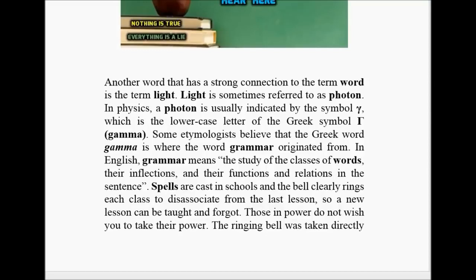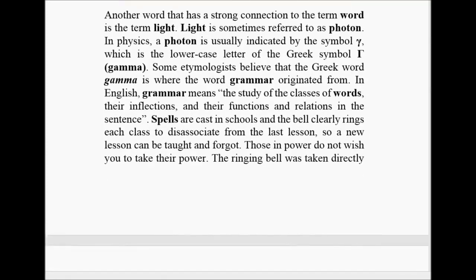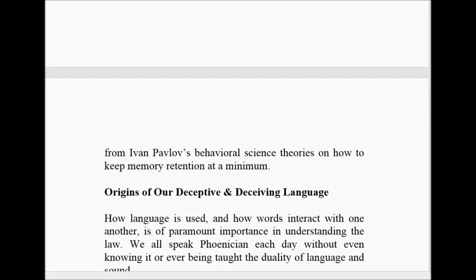Another word that has a strong connection to the term 'word' is the term 'light.' Light is sometimes referred to as a photon. In physics, a photon is usually indicated by the symbol gamma. Some etymologists believe that the Greek word gamma is where the word grammar originated from. In English, grammar means 'the study of classes of words, their inflections, and their functions and relations in a sentence.' Spells are cast in schools and spelling, and the bell rings at each class to disassociate from the last lesson. This comes from Pavlov's dog theory, where they rang the bell and the dog would salivate. So they instituted the bell system into public schools so that the children, when the bell would ring, would forget what they just learned.